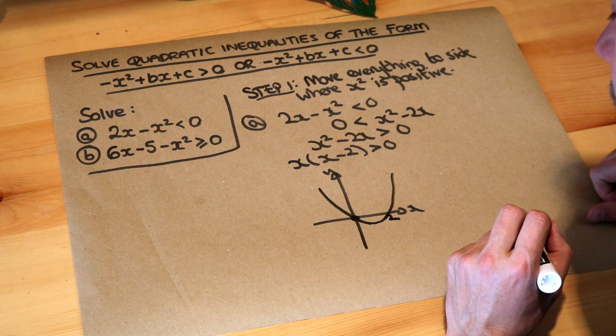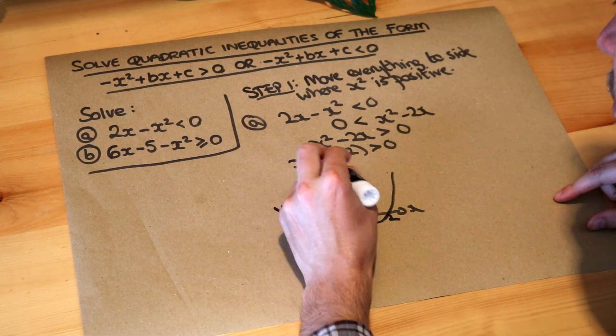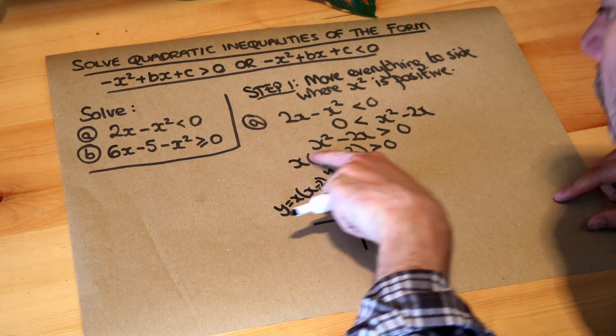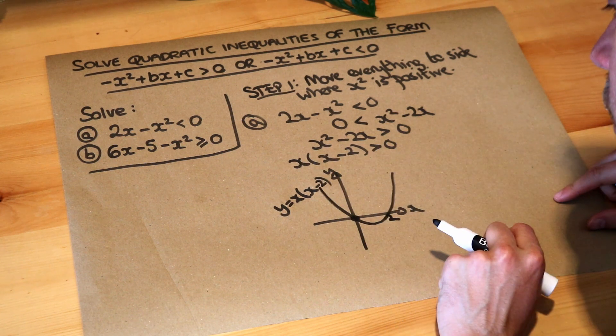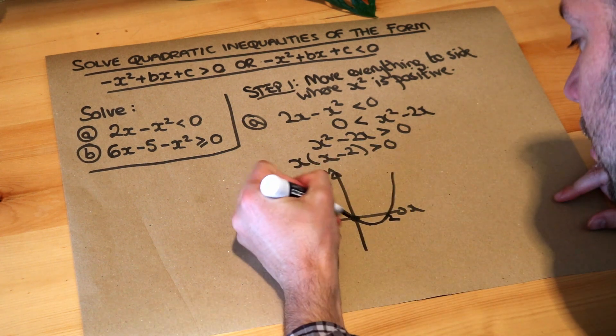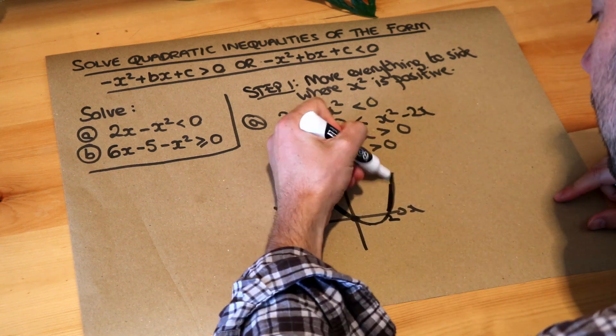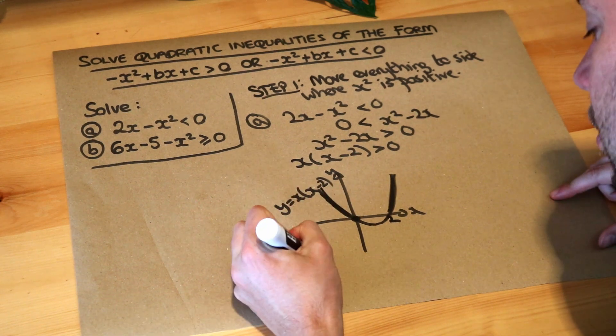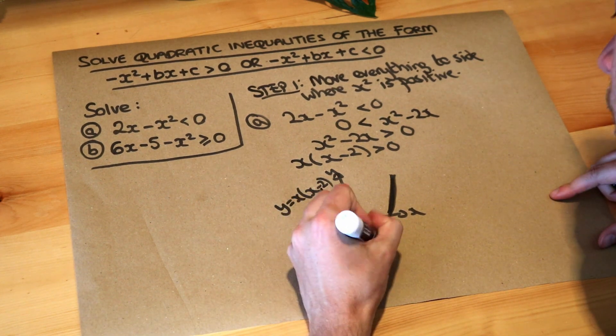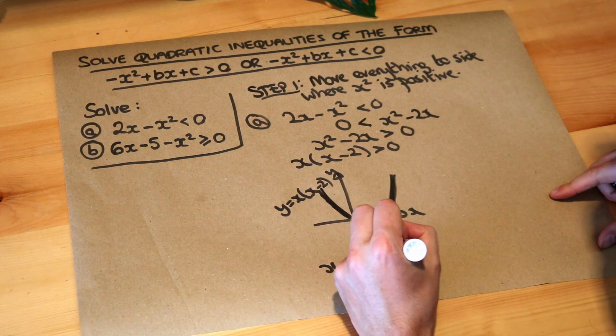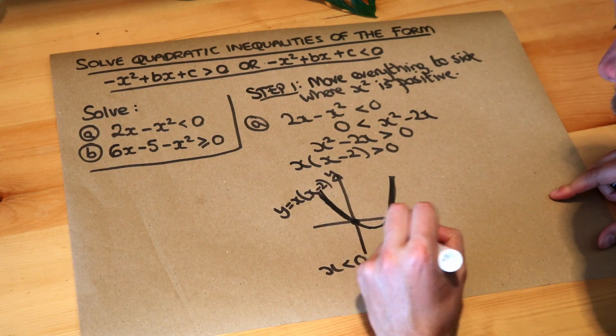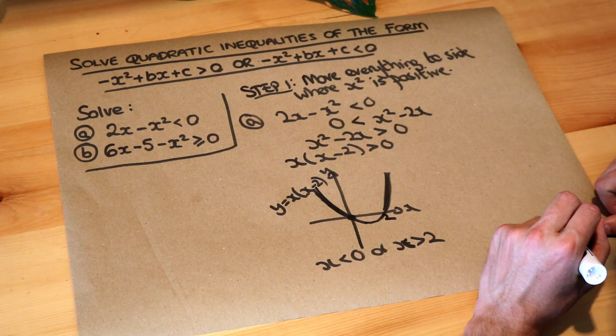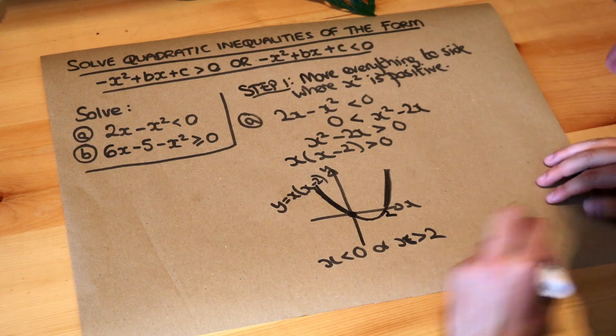And then the final step is to say well if we sketched y equals x brackets x minus 2, then where is the y value greater than zero? Well the y value is greater than zero in this part of the line and in this part of the line. Now what can we say about the x in this region? Well the x value is less than zero or we're in this part of the line where the x value is greater than two. So that is the final answer.